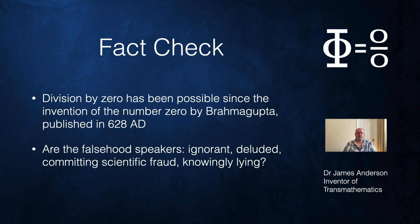So for the last 1400 years division by zero has been possible. Nonetheless, a lot of people today believe that division by zero is impossible. I've spoken about the first two reasons why they might think that, but there are some nasty reasons. It's possible that people are committing scientific fraud.